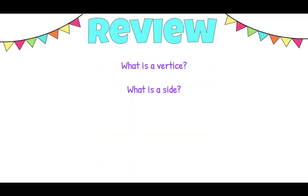So as a friendly review, vertices are the corners or points, and sides are the straight lines that connect the vertices. I hope this helps.